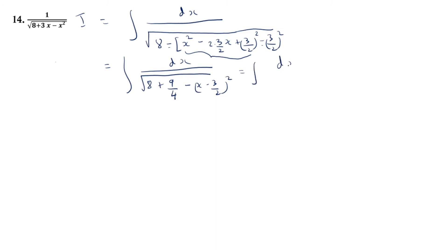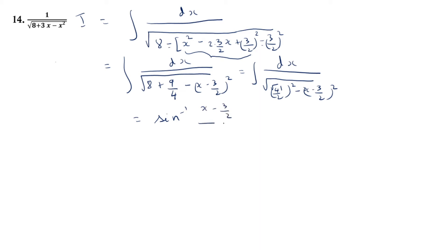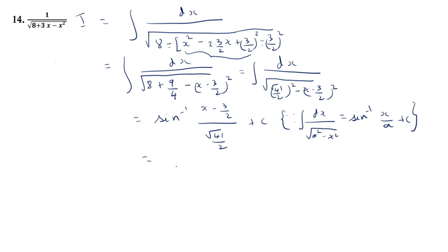So this is equal to the integral of dx divided by the square root of 8 plus 9/4, which is 41/4. I am writing 41/4 as (√41 / 2) squared. This is now of the form integral of dx by √(a² minus x²), which equals sin⁻¹(x/a). So the answer is sin⁻¹((x minus 3/2) divided by (√41 / 2)) plus C. Simplifying, this is equal to sin⁻¹((2x minus 3) / √41) plus C. So we have got the integral of the given function.